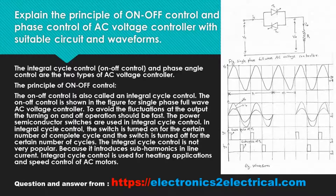Explain the principle of on-off control and phase control of AC voltage controller with suitable circuit and waveforms. The integral cycle control, on-off control, and phase angle control are the two types of AC voltage controller.